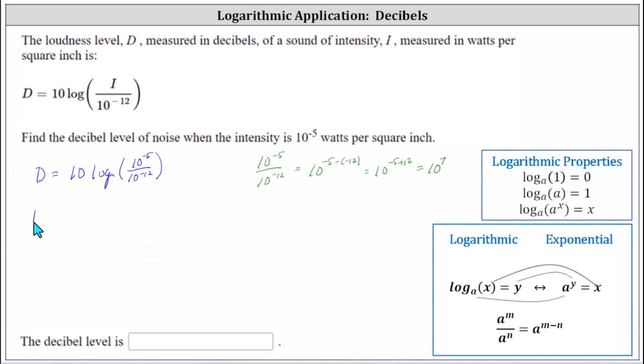This gives us the decibels D is equal to 10 times the common log of 10 to the power of 7. At this point, we can use one of our log properties. Recall log base A of A to the power of X equals X, and common log is log base 10. So log base 10 of 10 to the seventh is equal to 7.